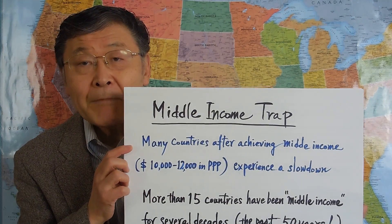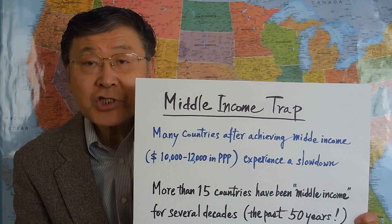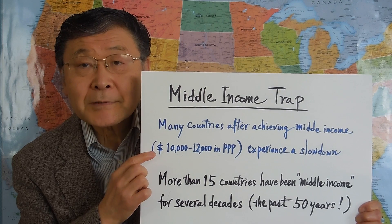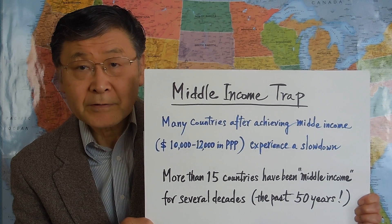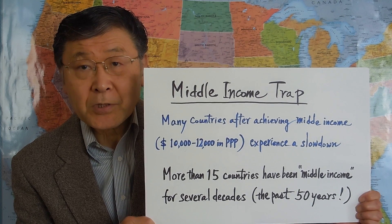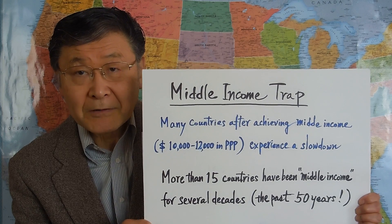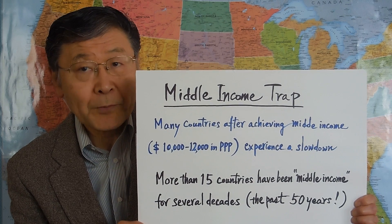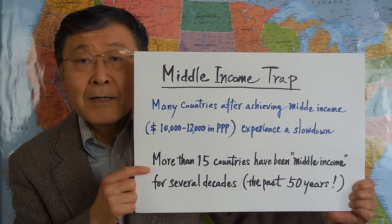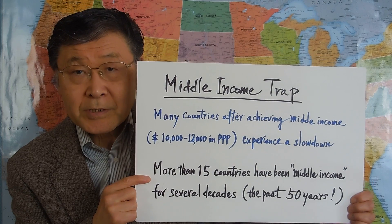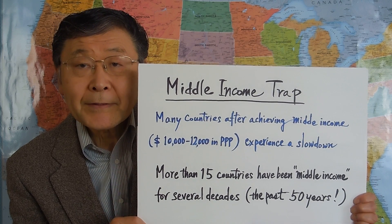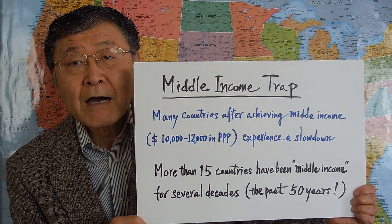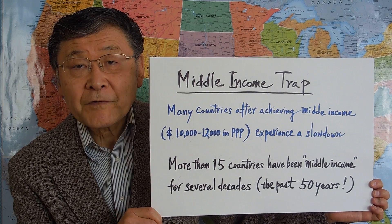Today, I'll talk about the middle income trap. The middle income trap is a situation in which many developing countries, after achieving a middle income level — around $10,000 to $12,000 dollars in real terms, in PPP terms — experience a sudden slowdown in economic growth performance. More than 15 countries, maybe around 20, have been at middle income levels for many, many years now, sometimes for 50 years.